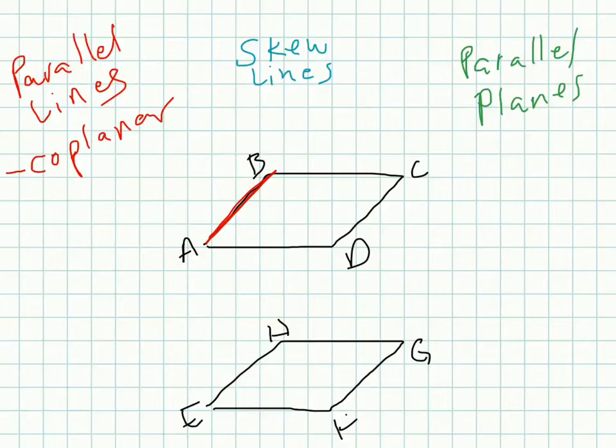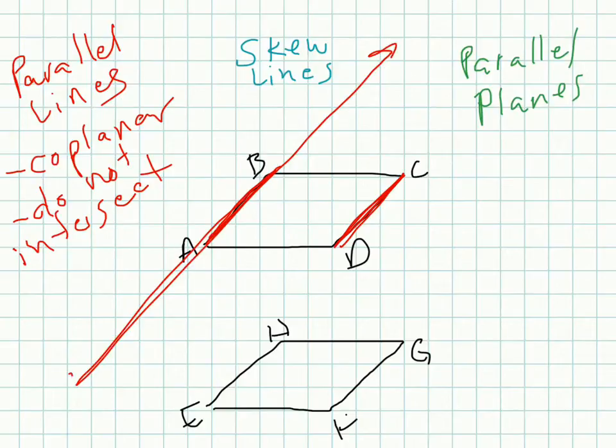The second part of what parallel lines are is that they do not intersect. Line segment AD intersects right here. So these are not parallel lines. Parallel lines need to not intersect. So line segment DC here, if these lines were to go on forever, they would never intersect.